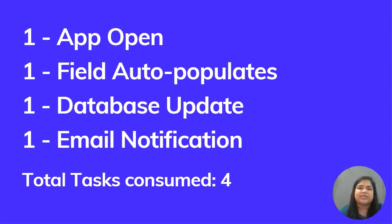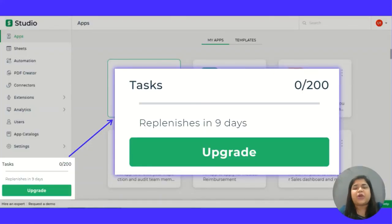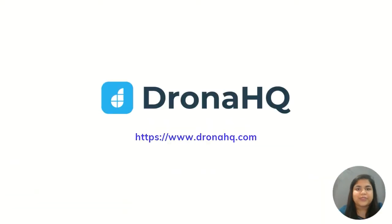So to summarize, when the person opened the app, the fields auto-populated, the database was updated, and an email was sent out — total four tasks were consumed. You can keep a tab on how many tasks you consume over here in DronaHQ. To learn more about the platform and about tasks, check out our website.